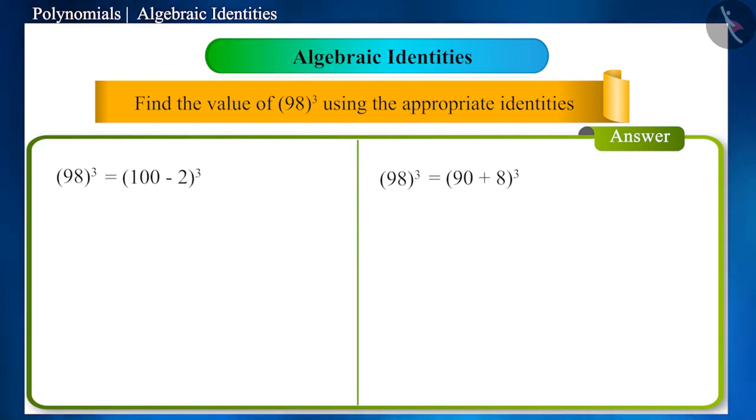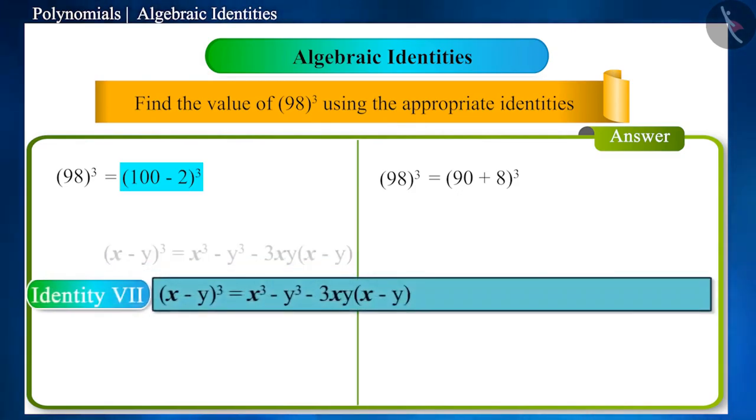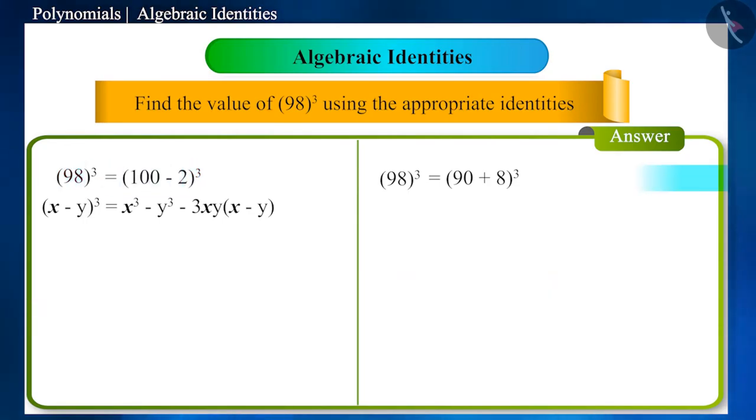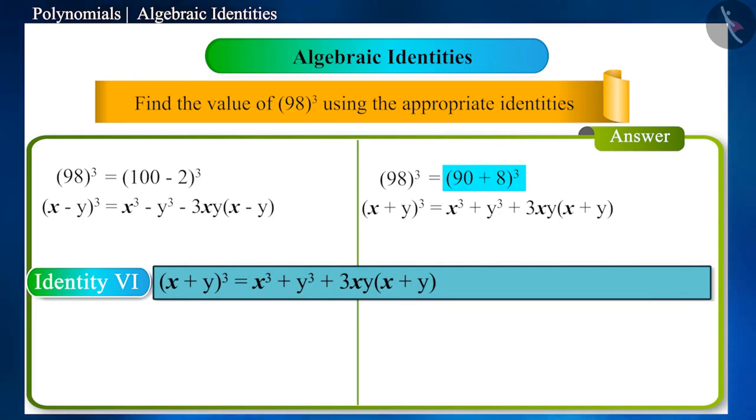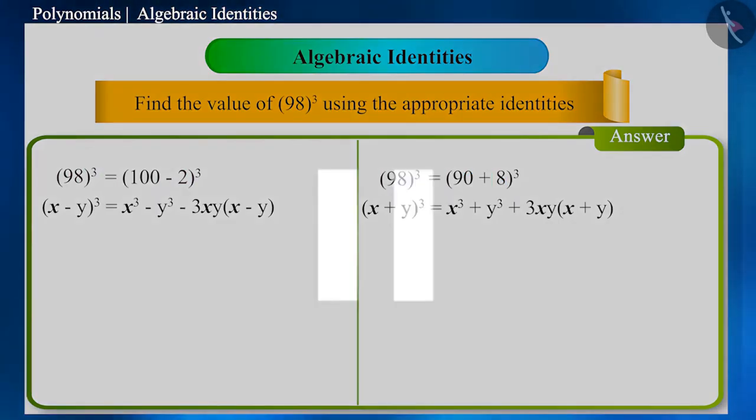When we write it as 100 minus 2 to the power of 3, then the identity x minus y to the power of 3 is used. And for 90 plus 8 to the power of 3, we will have to use the identity x plus y to the power of 3. Pause the video and try to solve it yourself.